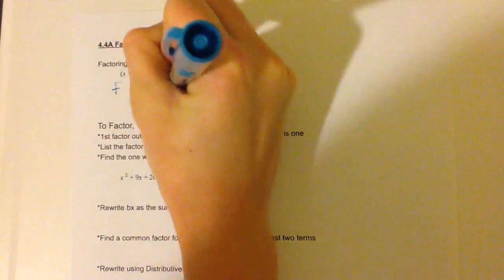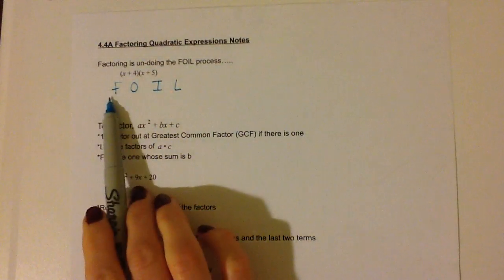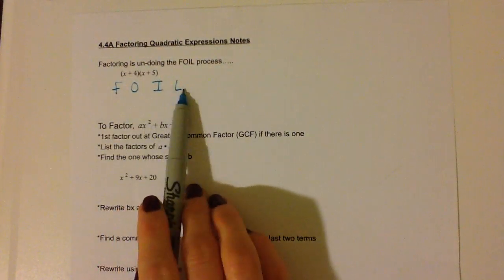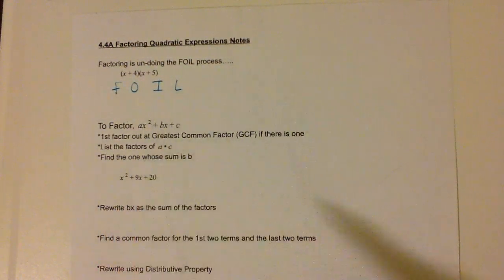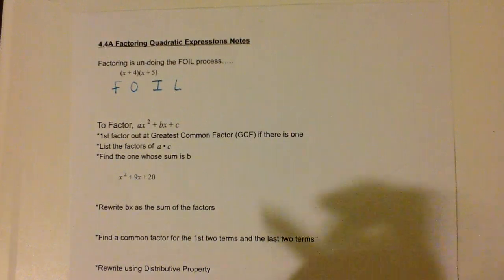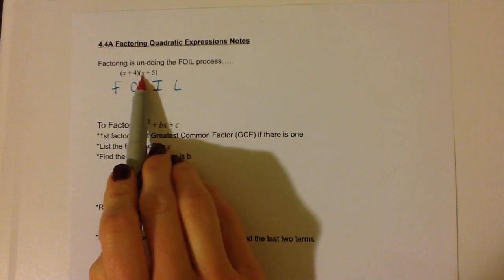If you remember FOIL, that is our first, outer, inner, last. So if we do first, that is going to be x times x, which is x squared.